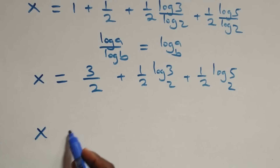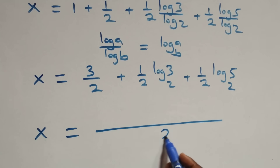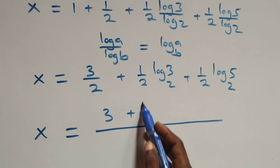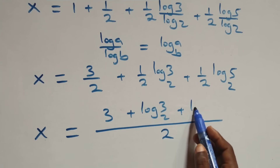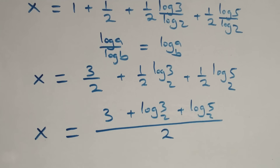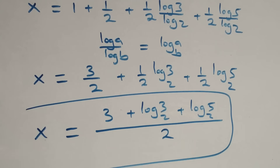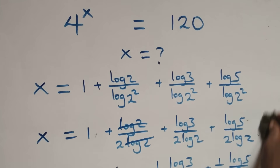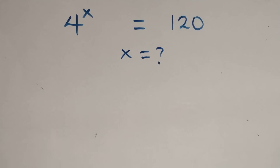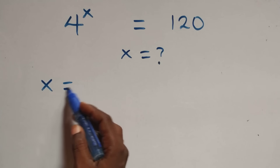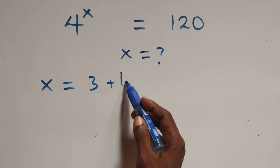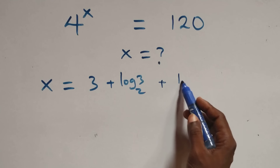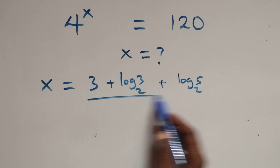Bringing everything together as one fraction with denominator 2, x equals (3 + log₂3 + log₂5) over 2. So the value of x is 3 plus log 3 base 2 plus log 5 base 2, all over 2. Let's verify this satisfies the given problem by substituting this value of x back.